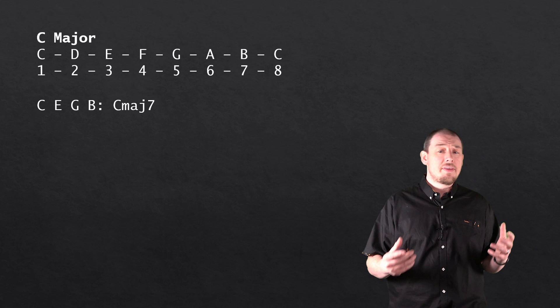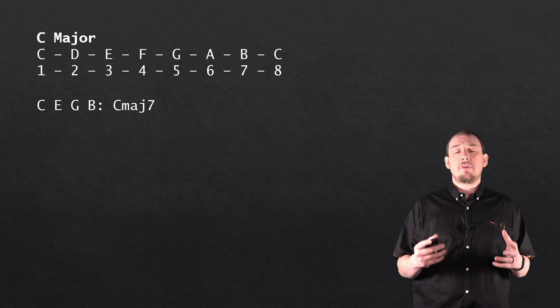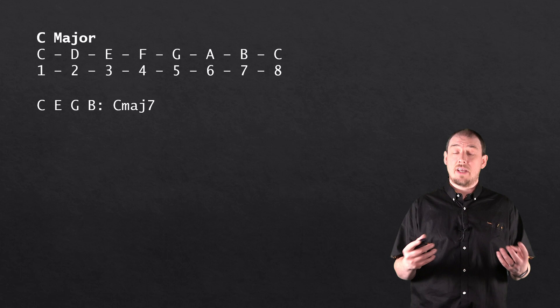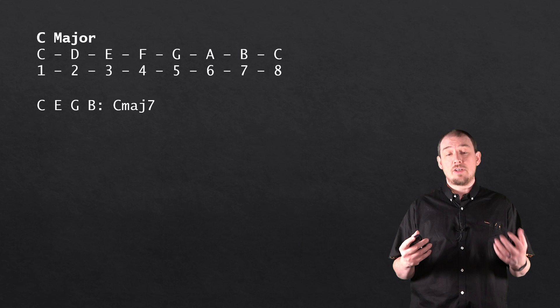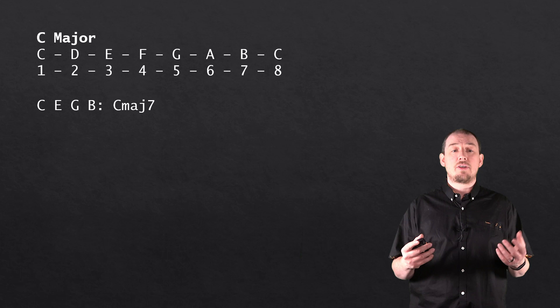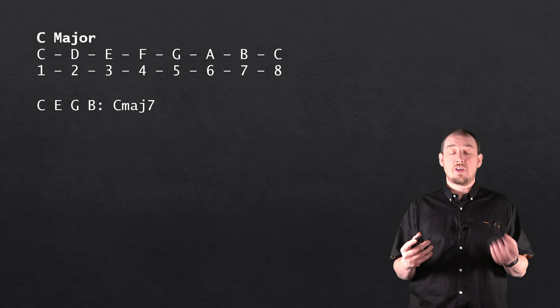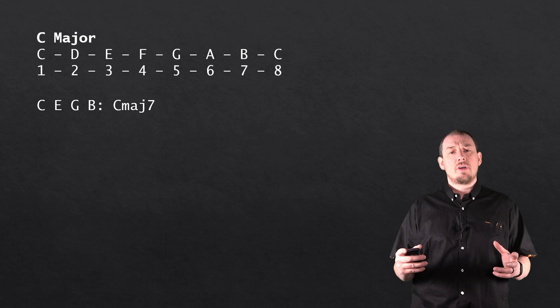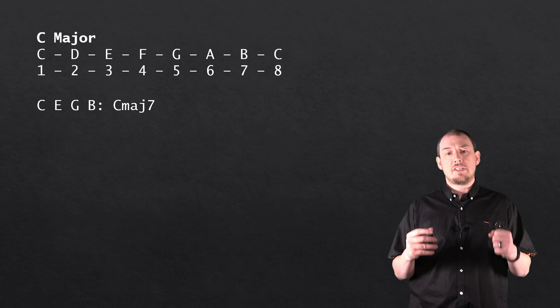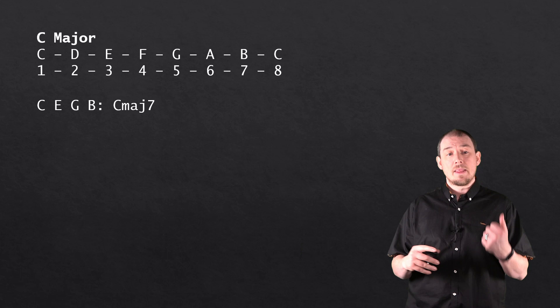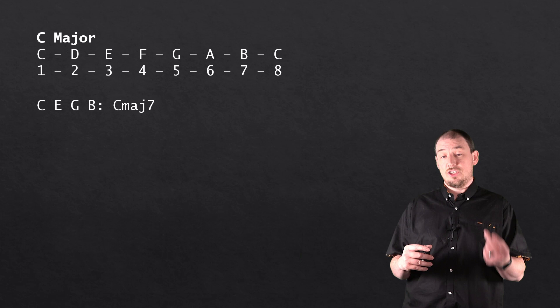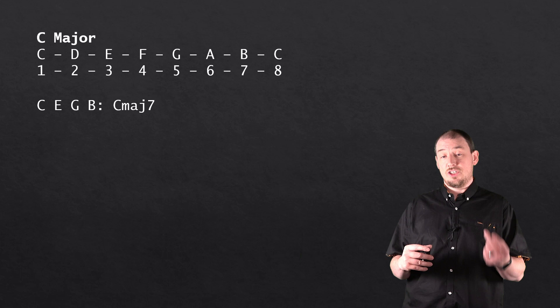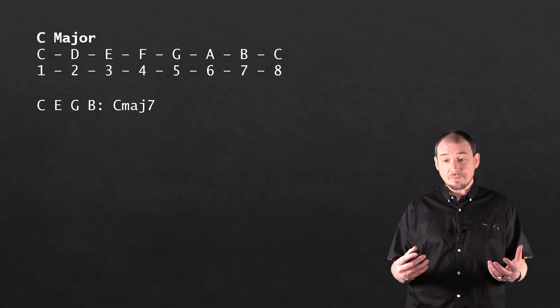Now we understand the major scale, the next thing is how chords are made up. We're talking about what we call the extended form of a chord. In its simplest form a chord is three notes, but we're talking about a four-note chord in its extended format. In C, the chord of C major is made up of C, E and G, but C major seven adds that extra note — the seventh — giving us C, E, G and B. Every chord is made up of the 1st, 3rd and 5th, extended by adding the 7th.